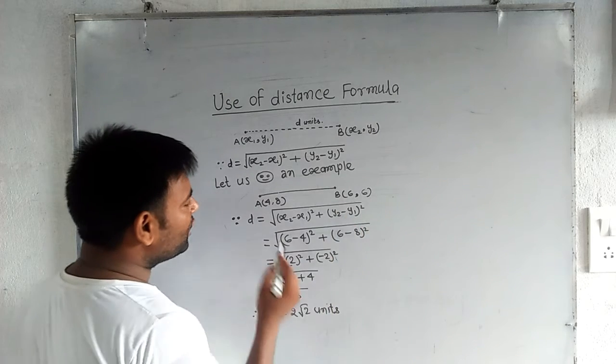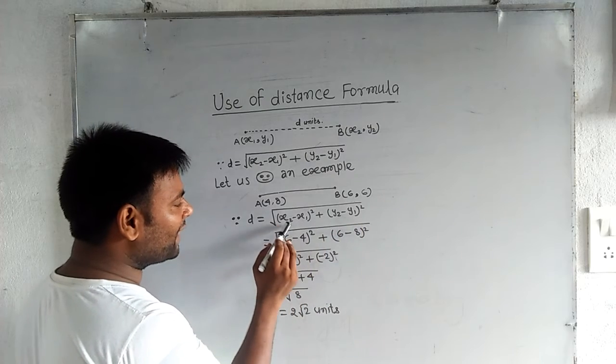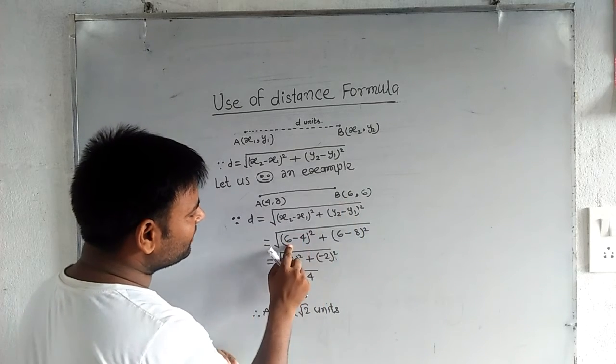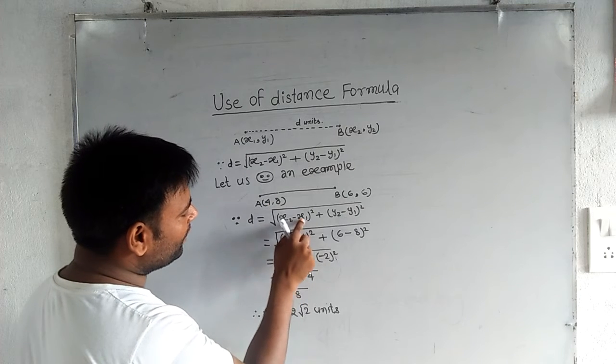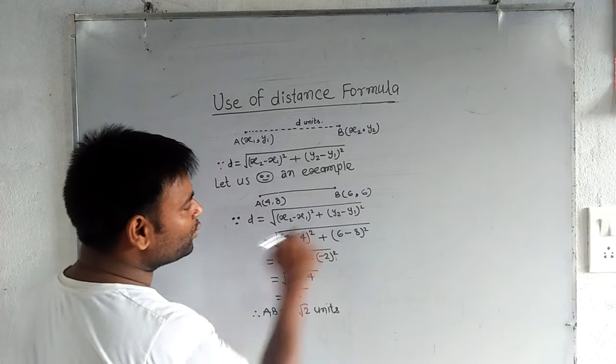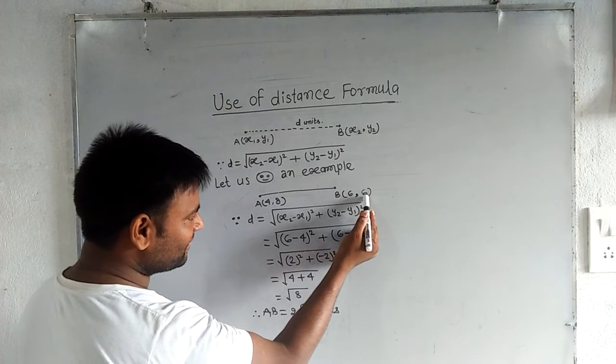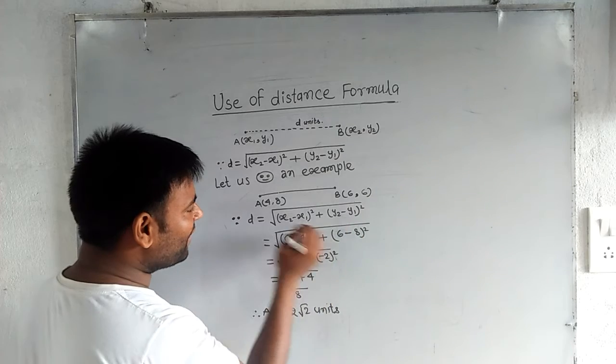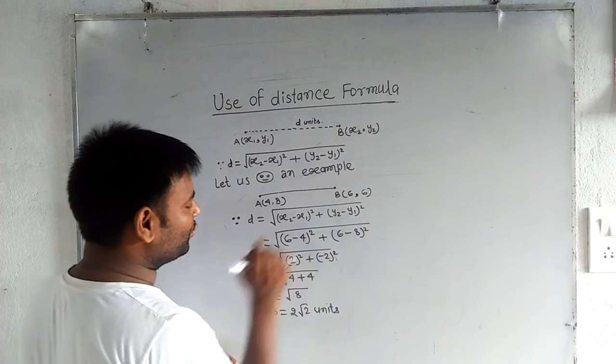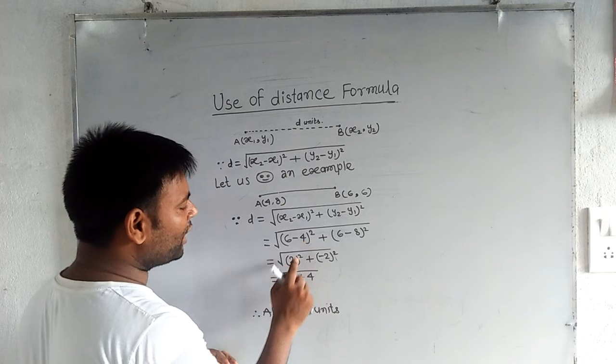So we substitute these values in this formula. x2 is 6, x1 is 4, so 6 minus 4 to the power 2, plus y2 is 6 minus y1 is 8 to the power 2.